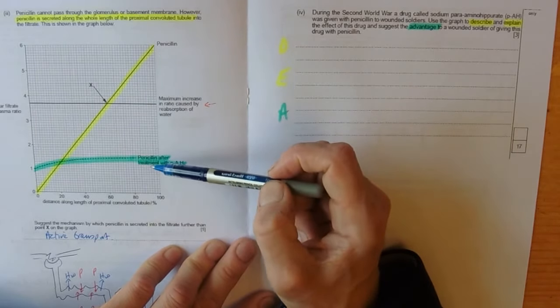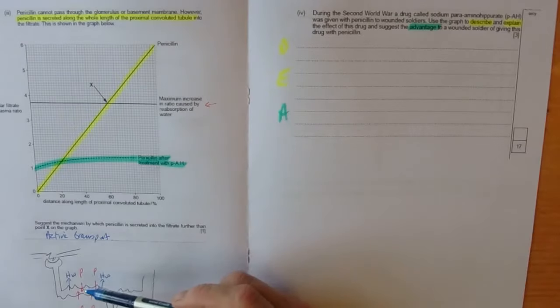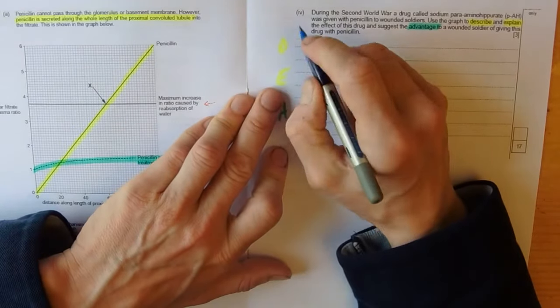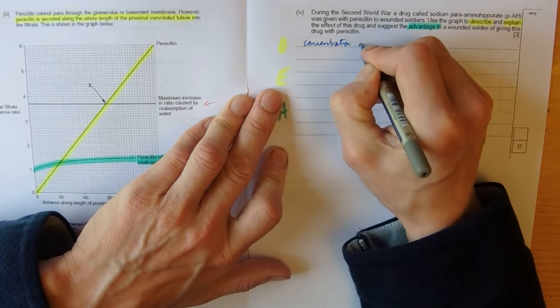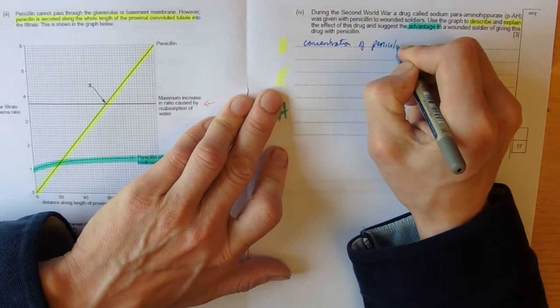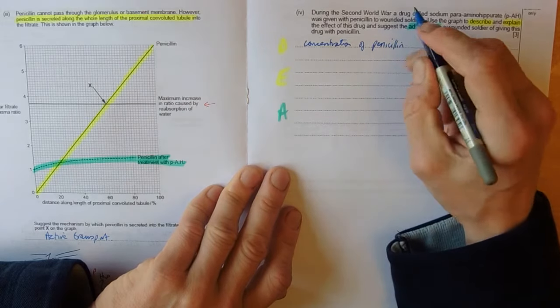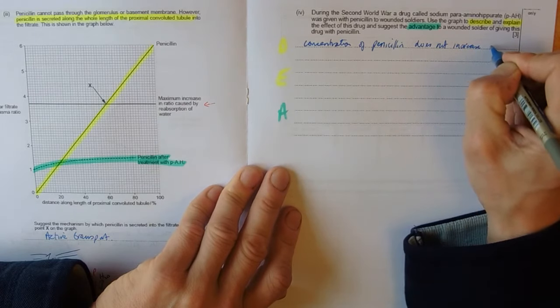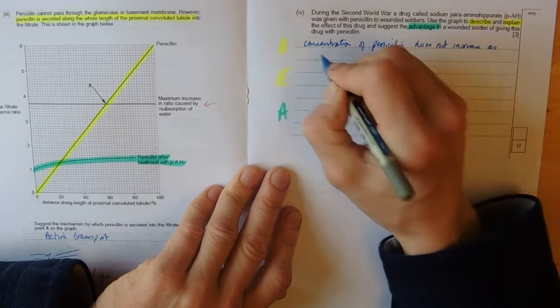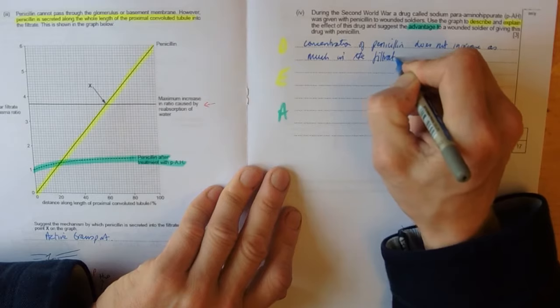So, if we give them this extra drug, there's essentially less in the filtrate. So, less in the filtrate. So, concentration of penicillin does not increase as much in the filtrate.